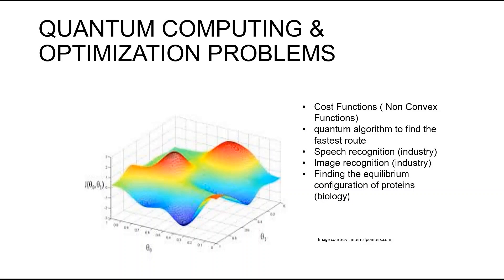In a complex data set, feature selection involves an exhaustive search whose complexity often grows exponentially, making it impractical to undertake. Users end up using heuristic methods with polynomial time complexity. However, quantum computers can accomplish such optimization with polynomial time complexity using parallel computation and without having a need for imperfect heuristic optimization methods.